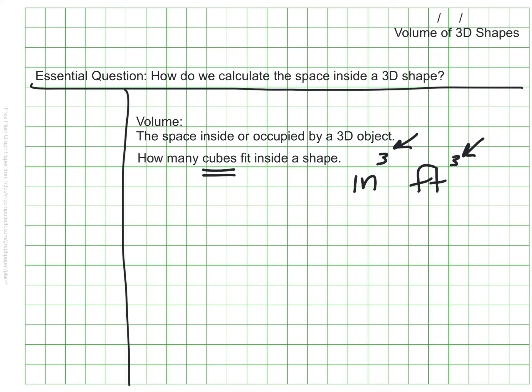Now some of us may be thinking, I know how to find volume. My teacher last year taught me that to find the volume I just need to multiply the length times the width times the height. And that's true sometimes, but not always. That will work with a particular type of object, but not with every object. So instead of using length times width times height, I think there's a better way for us to think about volume.